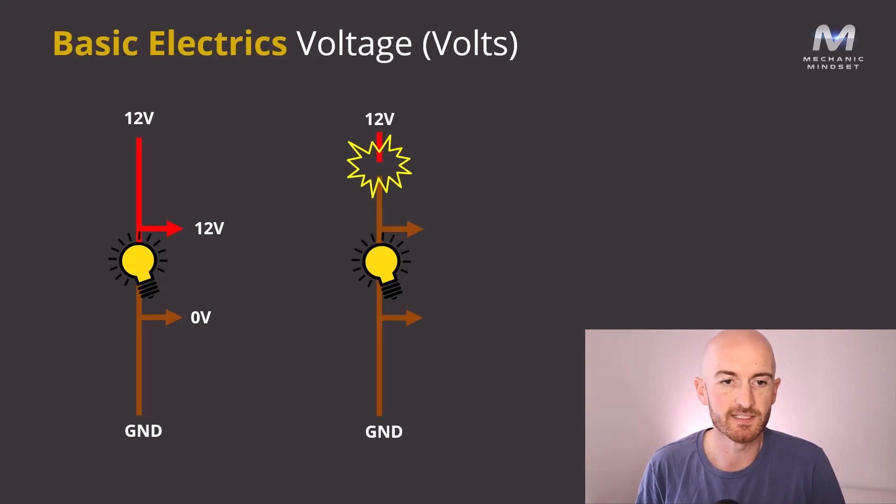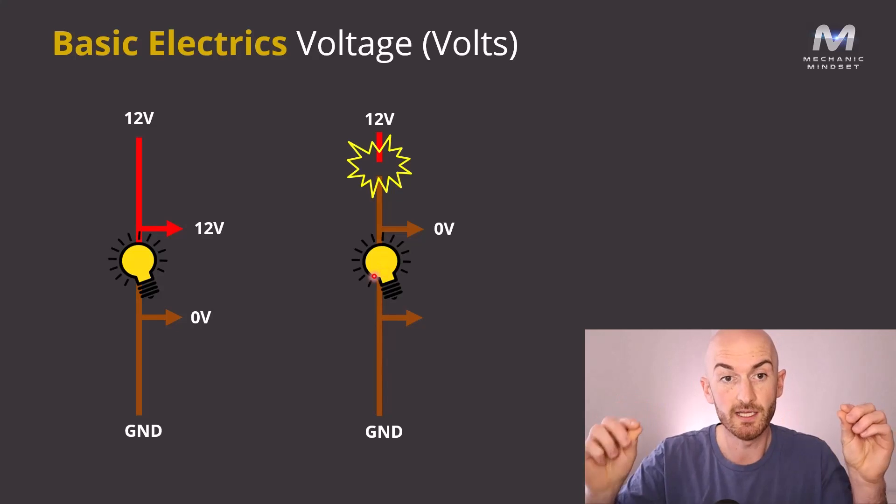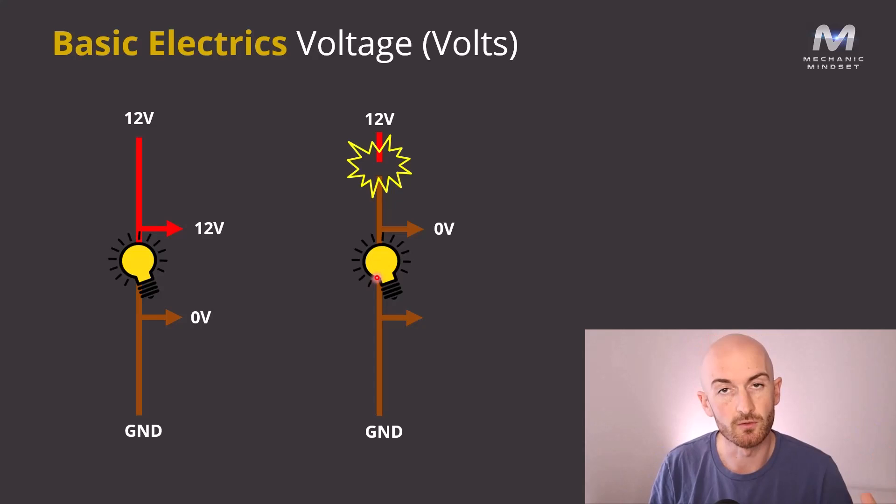So now if we take a look at this next circuit, what we've done is we've made an open circuit in the live side, in the positive side of the circuit. So now if we used our multimeter, our volt meter, and took a measurement at the live side of the bulb, we can see that we would have zero volts because we've got a ground connected here. The bulb is just a piece of wire at the end of the day and the bulb is not going to be switched on. So there's going to be no load, there's going to be no drop in voltage. So we would have zero volts on the live side of the bulb. We would also have zero volts on the ground side of the bulb.